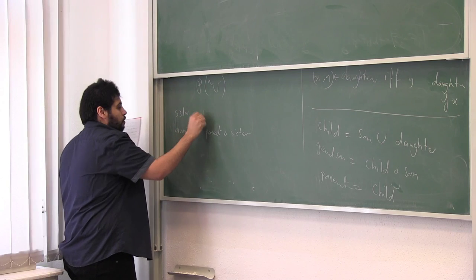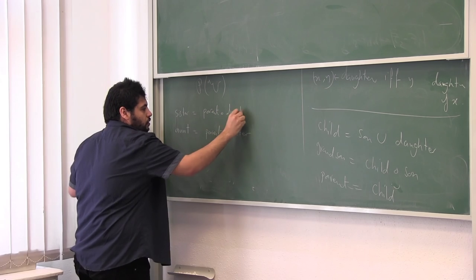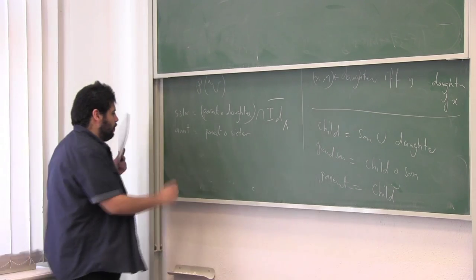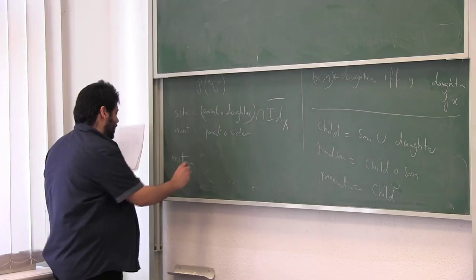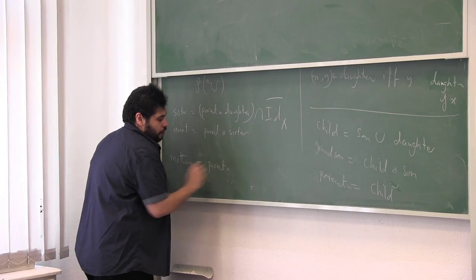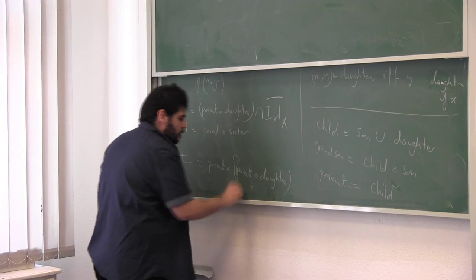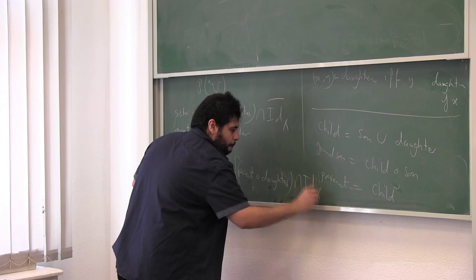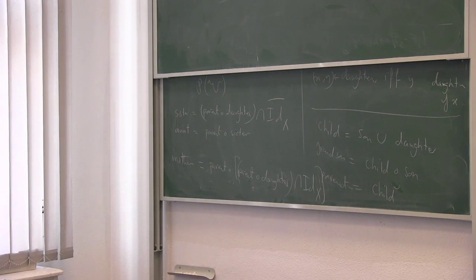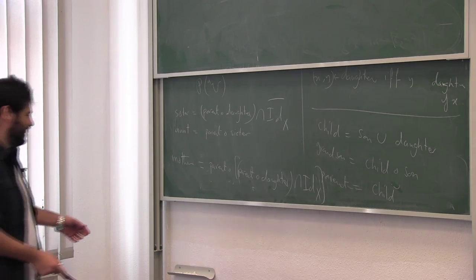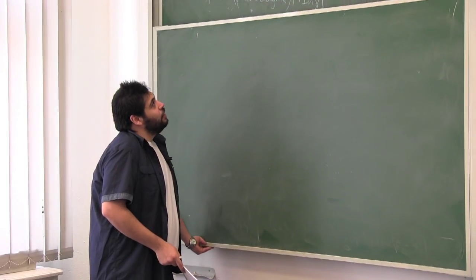Of course, we should define 'sister', which is a parent's daughter who is not myself. And 'mother' can be defined to be a parent who has a parent, and she is their daughter, and that daughter is the same person — assuming the usual exception of someone who doesn't have a mother.